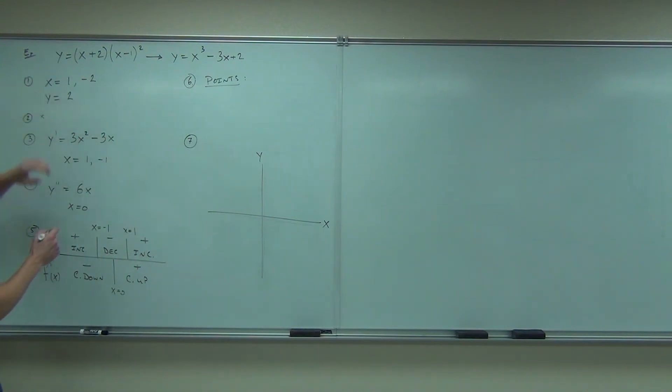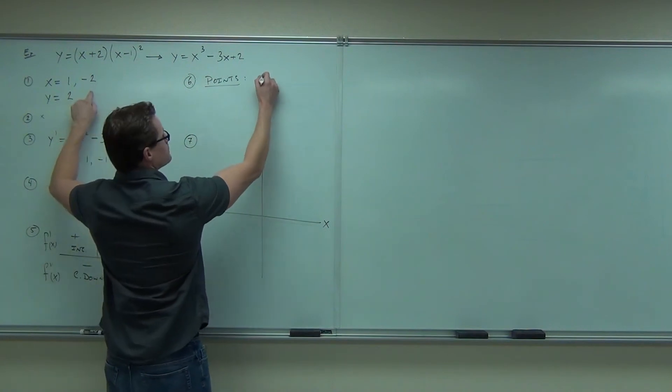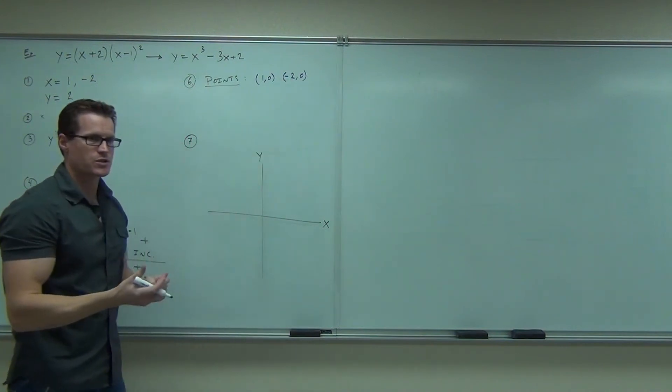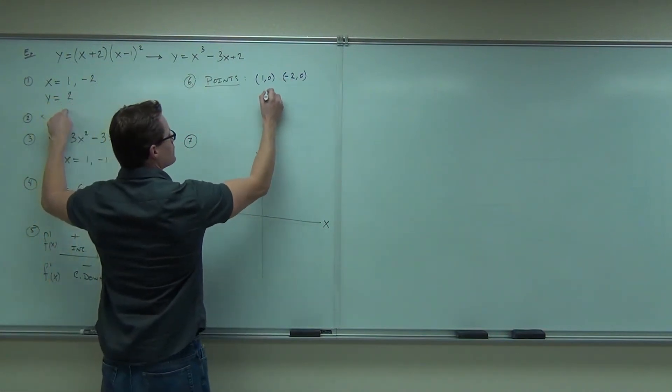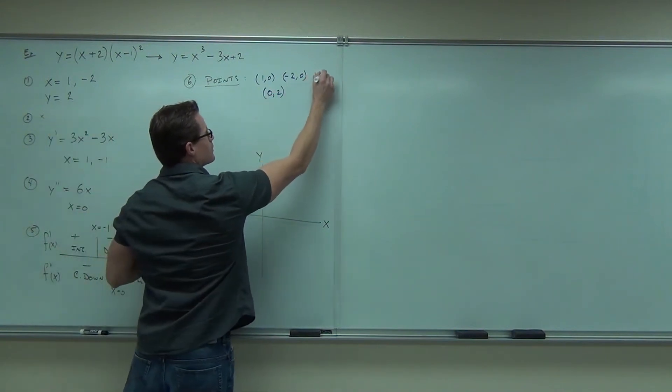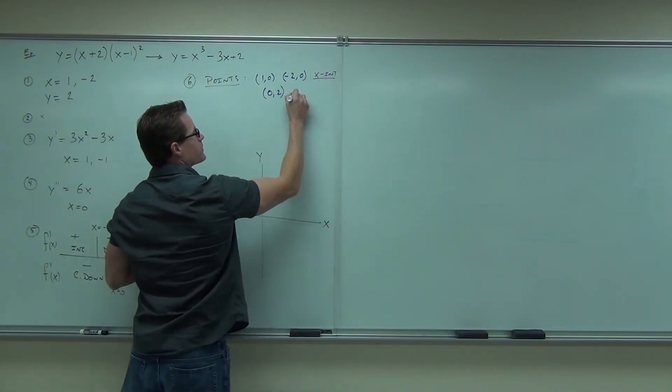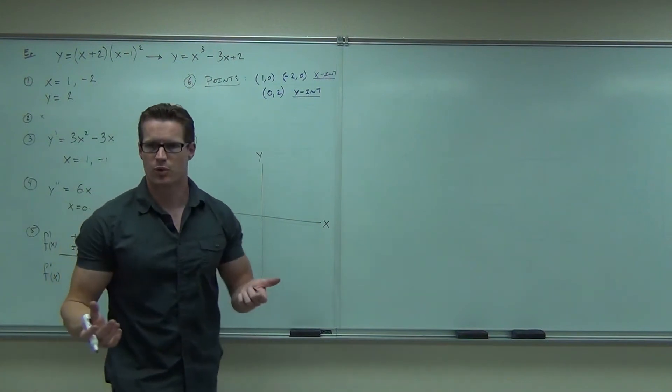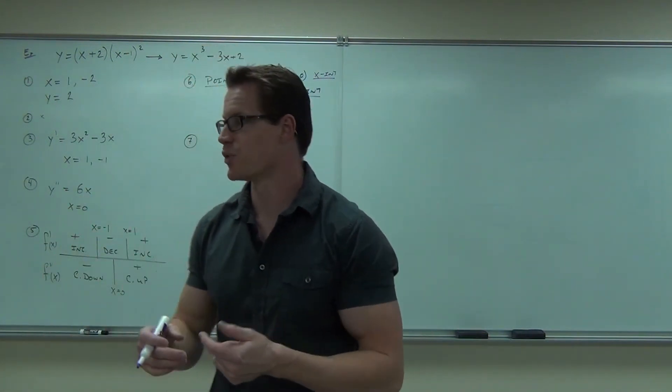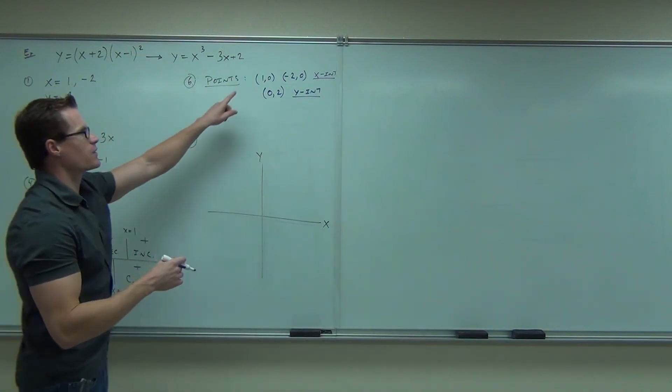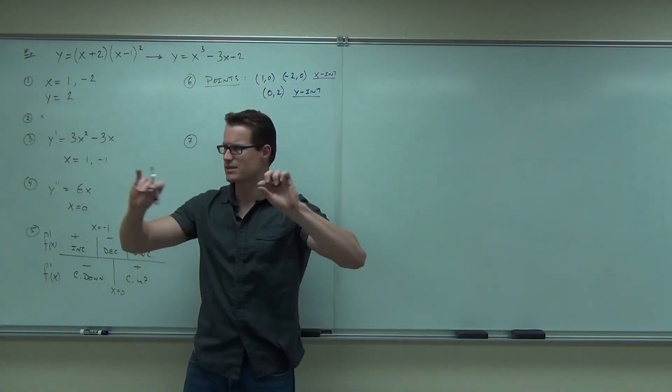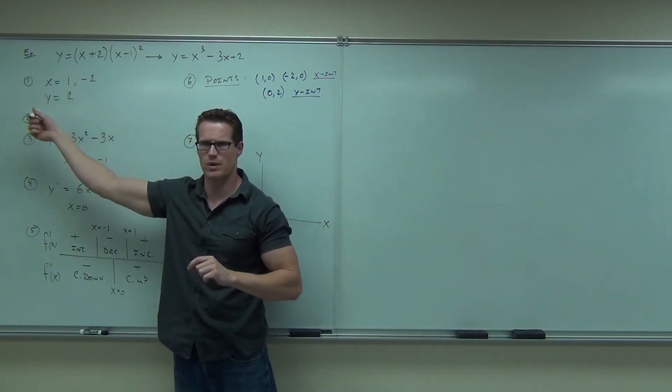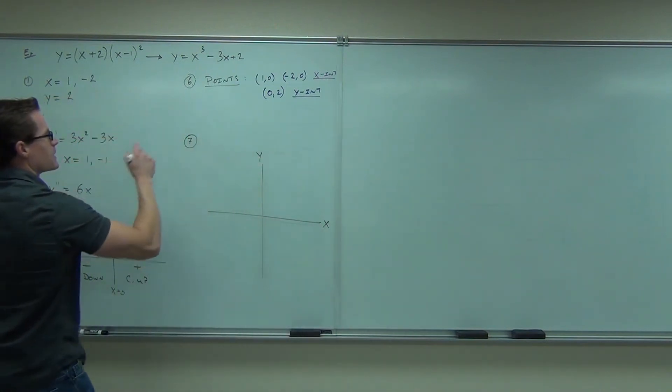I know the x-intercepts automatically give us some points. Basically, 1, 0. Negative 2, 0. Those are my x-intercepts. My y-intercept will give me another one. 0, 2. So x-intercept, y-intercept. But then all of my critical numbers, my critical points, like my relative max and min, that's more points. My inflection point, that's another point. We did that last time, right? If you don't remember that, look back at your notes or look at the video.